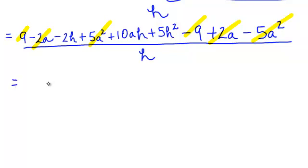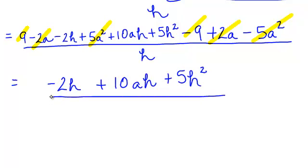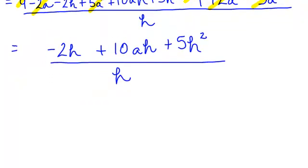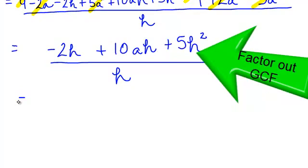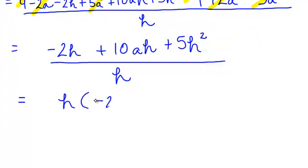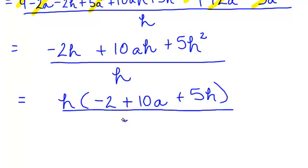So, I will have negative 2h plus 10ah plus 5h squared, all of that divided by h. We can factor in the numerator. Here, we have a GCF of h. When I pull that out, I will have negative 2 plus 10a plus 5h, all of that is divided by h.